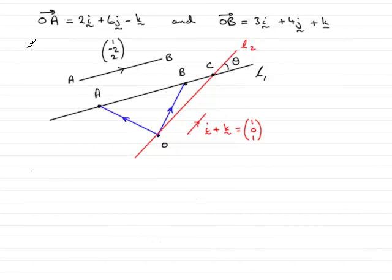Now in the final part, part D, we're asked to find the position vector, that's the vector O to C, where the lines cross.